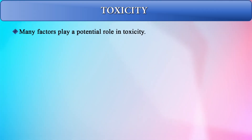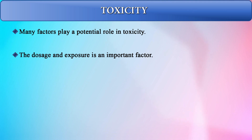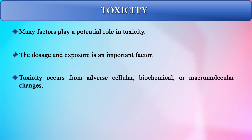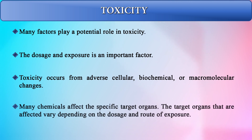Many factors play a role in toxicity and the effects of toxic agents. Dosage and exposure are important factors, and toxicity occurs from adverse cellular, biochemical, and macromolecular changes. Many chemicals affect specific target organs, which vary based on dosage and route of exposure. Some chemicals act locally upon direct exposure, triggering skin or eye irritation, dermatitis, or respiratory symptoms, while other agents cause systemic effects at sites remote from the point of exposure.